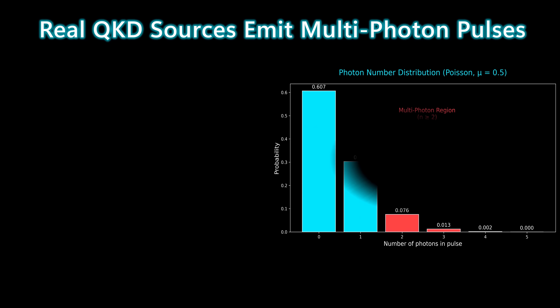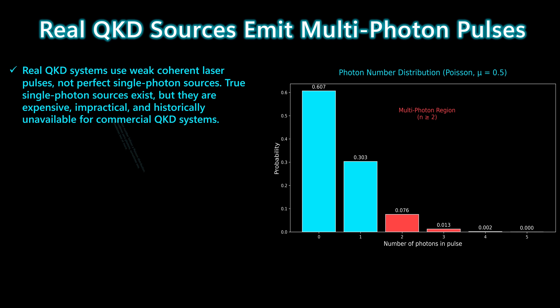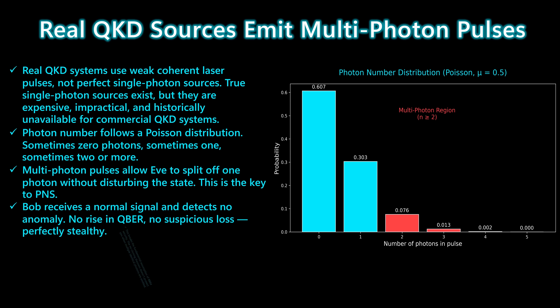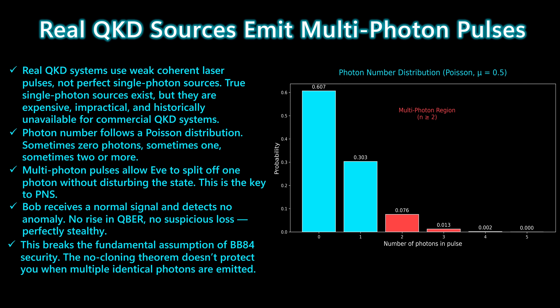In practice, real QKD systems don't use perfect single-photon sources. Instead, they rely on weak coherent laser pulses whose photon number follows a Poisson distribution. This means some pulses contain no photons, some contain one, and a small but significant fraction contain two or more photons. Those multi-photon pulses open the door to the photon number splitting attack.